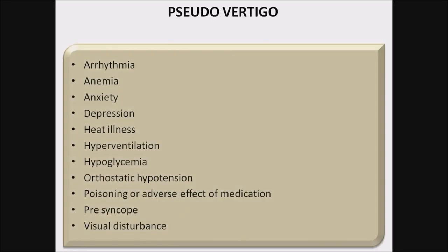Pseudovertigo: the list of pseudovertigo conditions includes arrhythmia, anemia, anxiety, depression, heat illness, hyperventilation, hypoglycemia, orthostatic hypotension, poisoning or medicine side effects, presyncope, and visual disturbance.